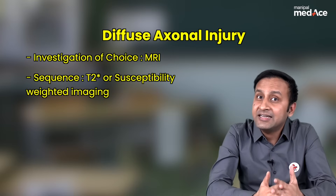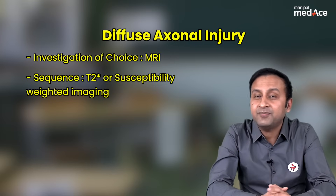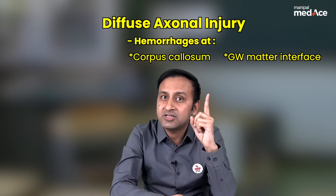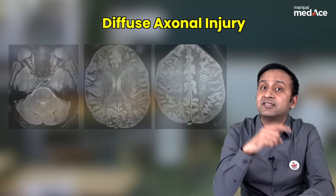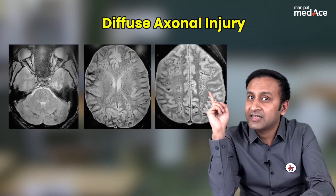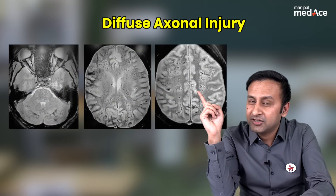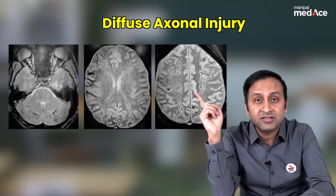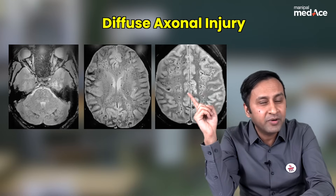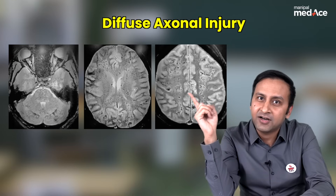The sites at which bleeds occur in diffuse axonal injury are the gray-white matter interfaces, the corpus callosum, and the brainstem. This is how the bleeds look on susceptibility-weighted imaging in cases of diffuse axonal injury — these small black foci represent foci of blooming or small microbleeds which have occurred as a result of DAI. This is all about traumatic intracranial hemorrhages.